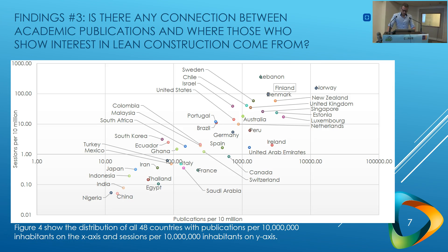Figure 4 shows the distribution of all 48 countries with publications per 10 million inhabitants. In order to present the data, we used a logarithmic scale for both the y-axis and the x-axis. This was necessary because of the large range of values between the lowest and the highest.